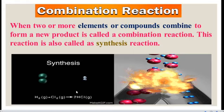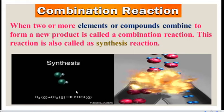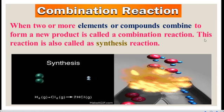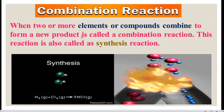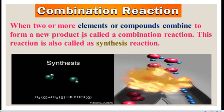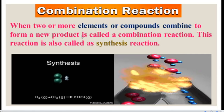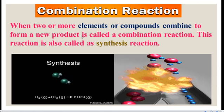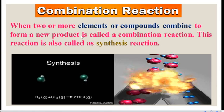What is a combination reaction? When 2 or more elements or compounds combine to form a new product, it is called a combination reaction. A new product is manufactured or synthesized. That is why this reaction is also called a synthesis reaction — synthesis means a new substance will be produced.